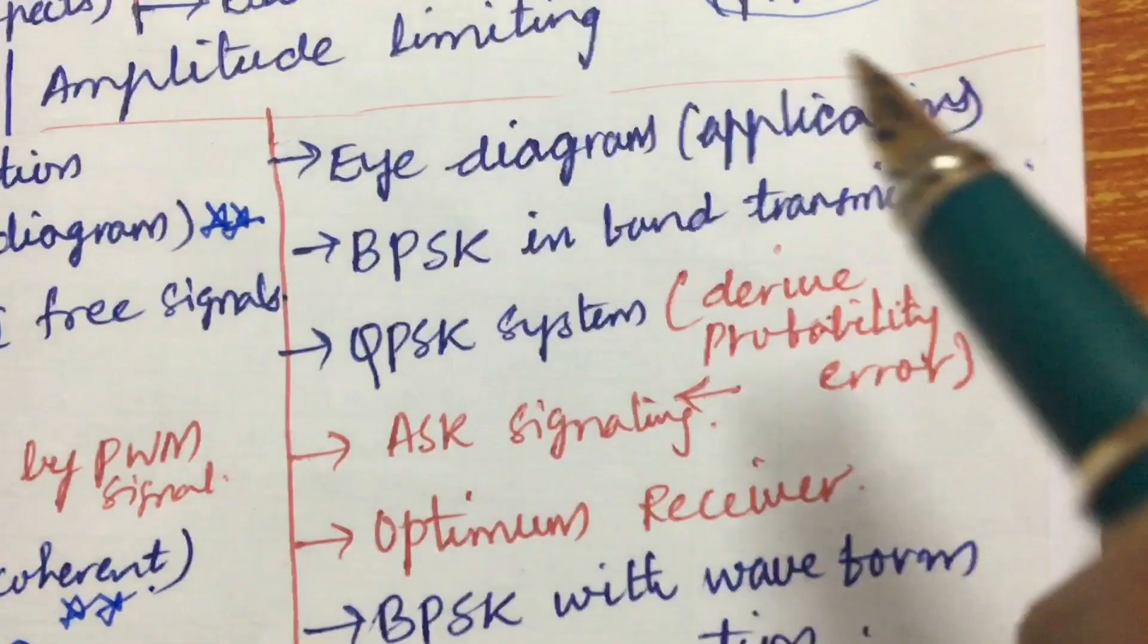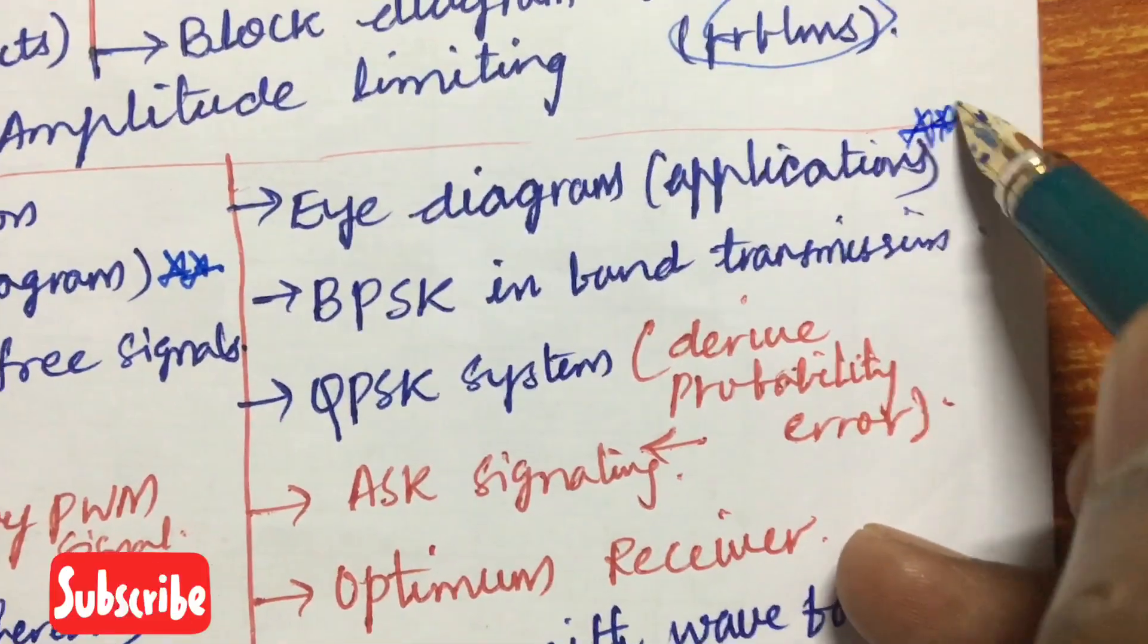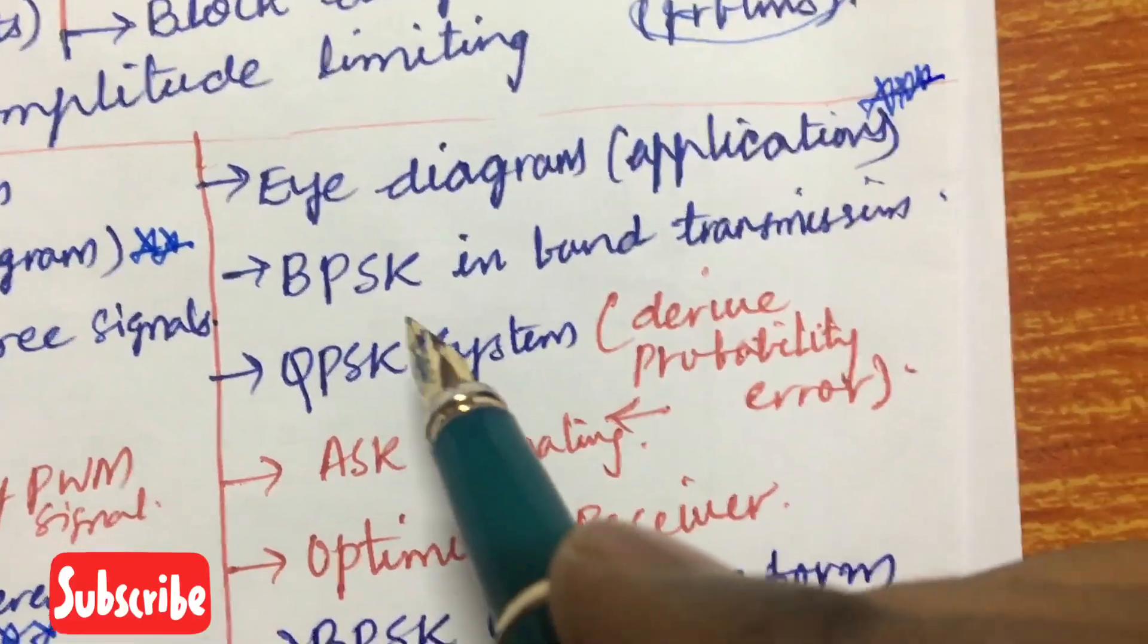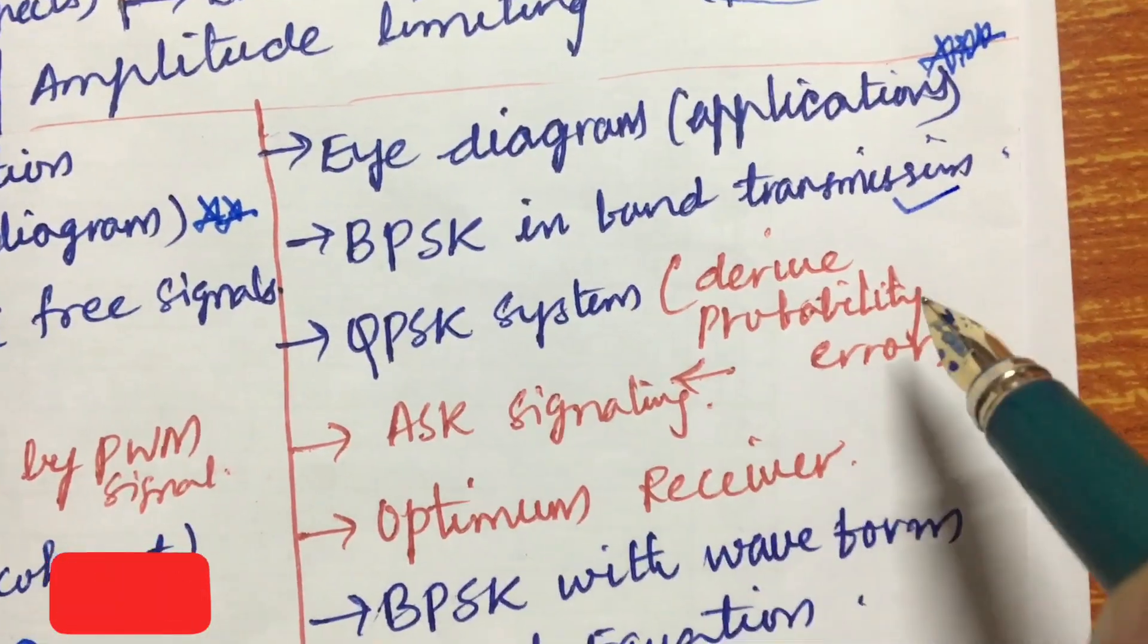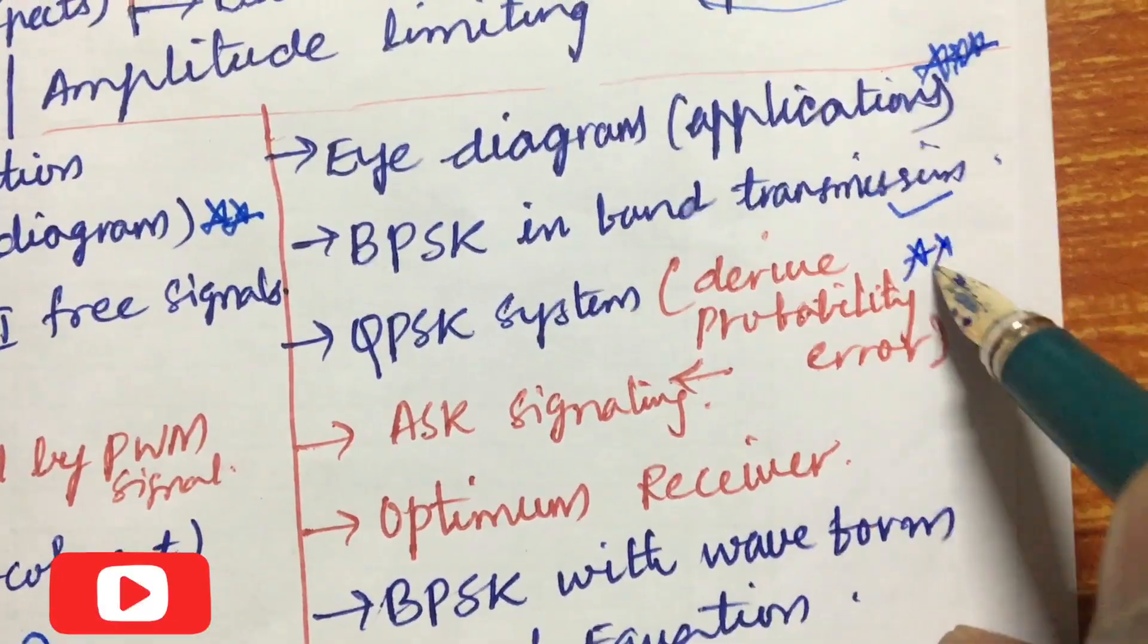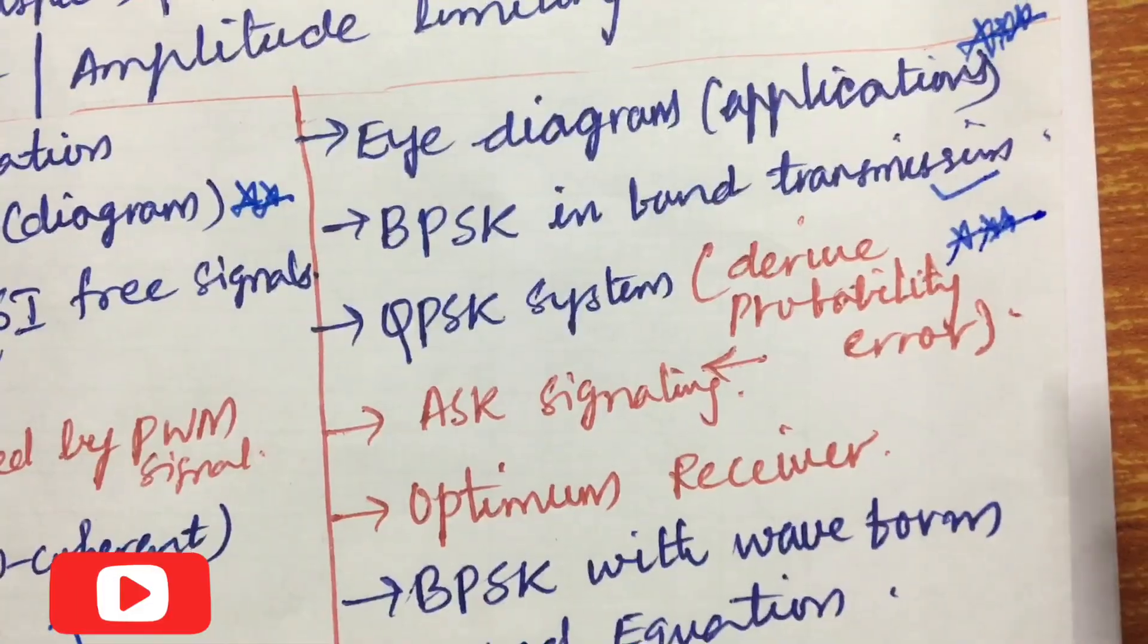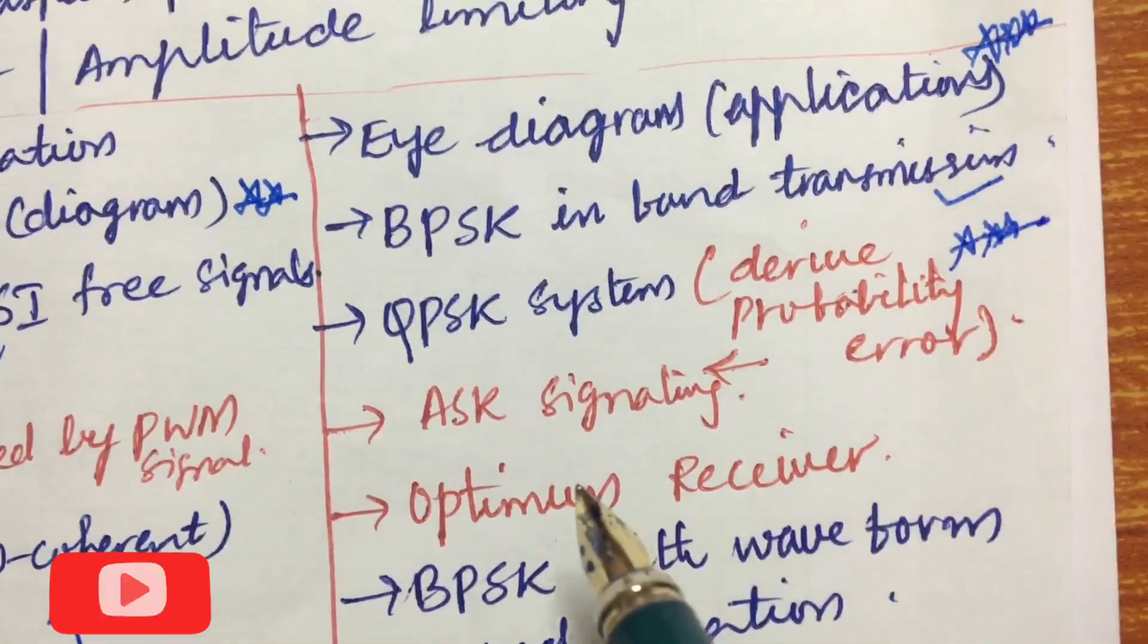Later, the eye diagram and its applications is very very important and gunshot question. And BPSK in the lab, BPSK in band transmission and QPSK system derived probability error is also one of the very important questions. If you are working out the 8th unit you need to work out all this.